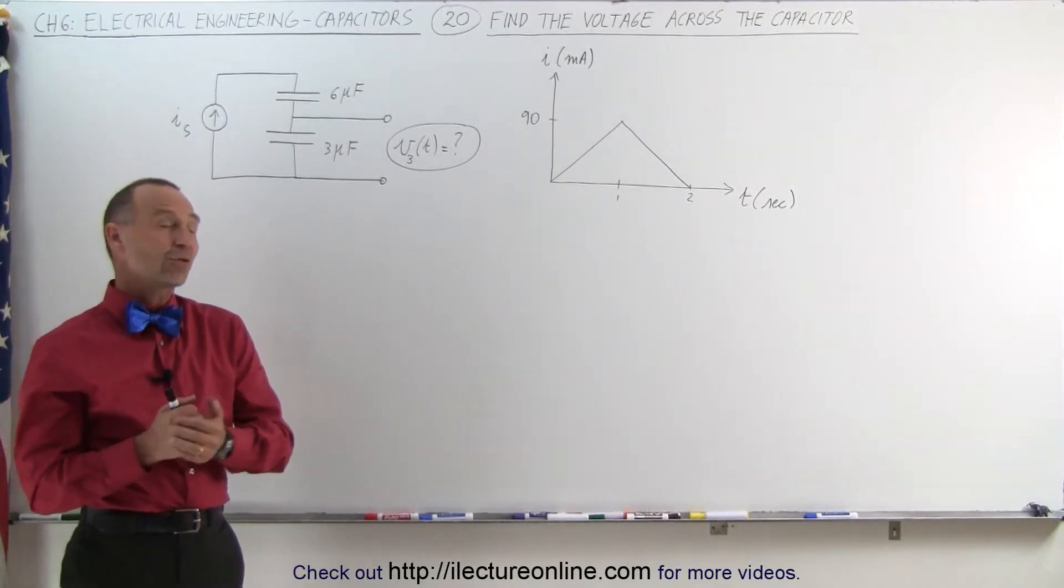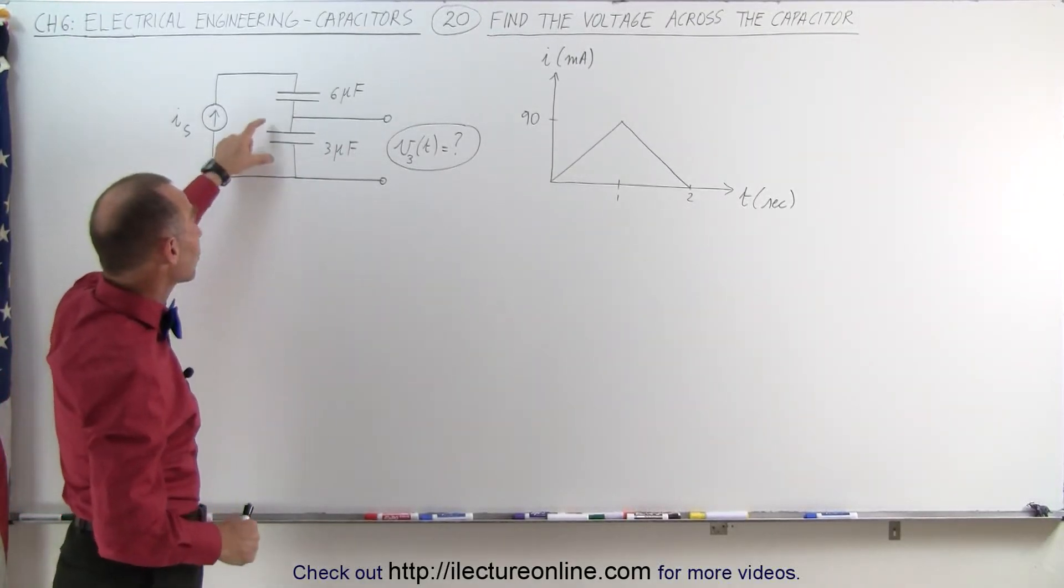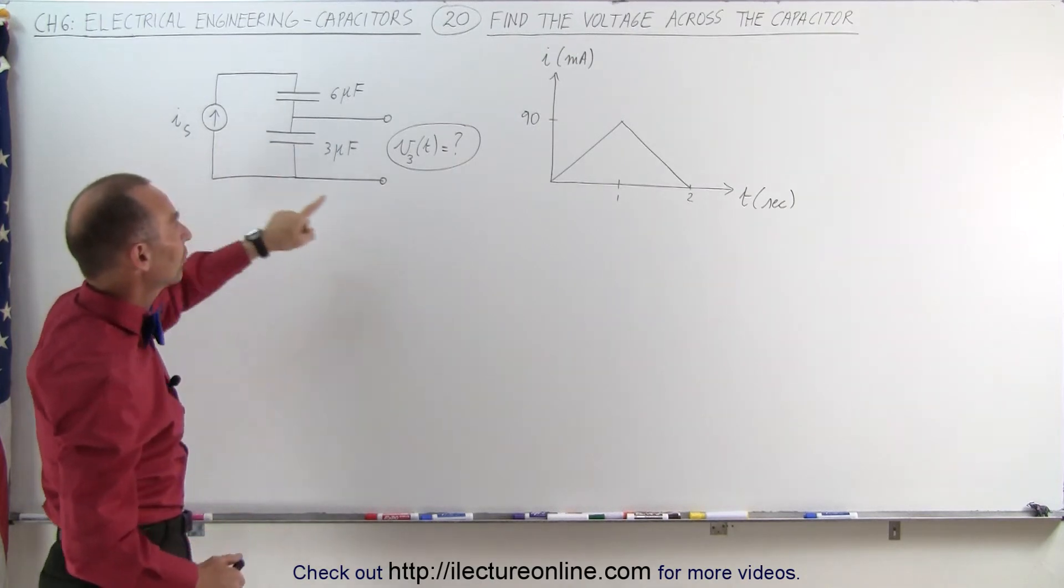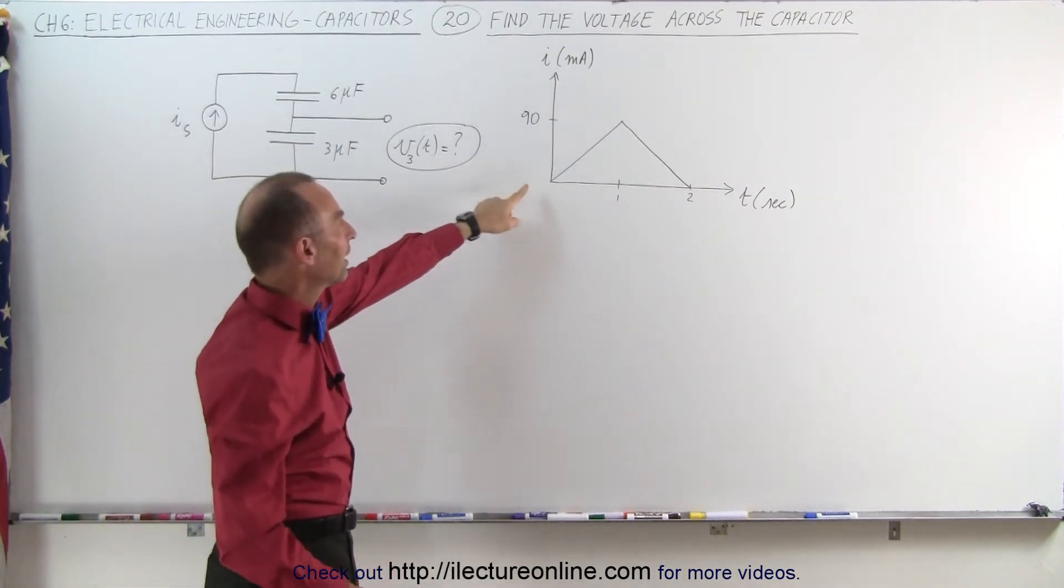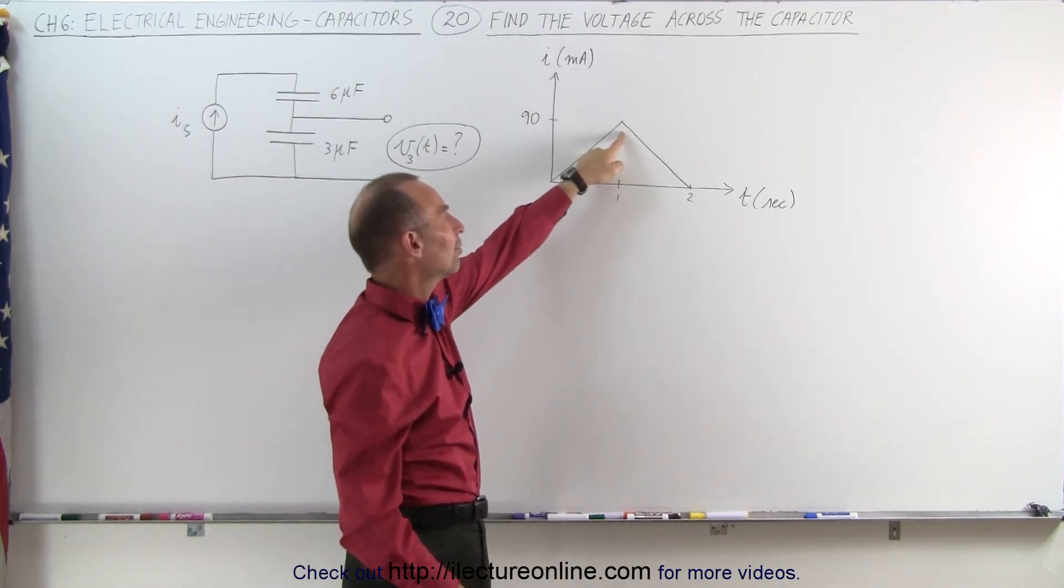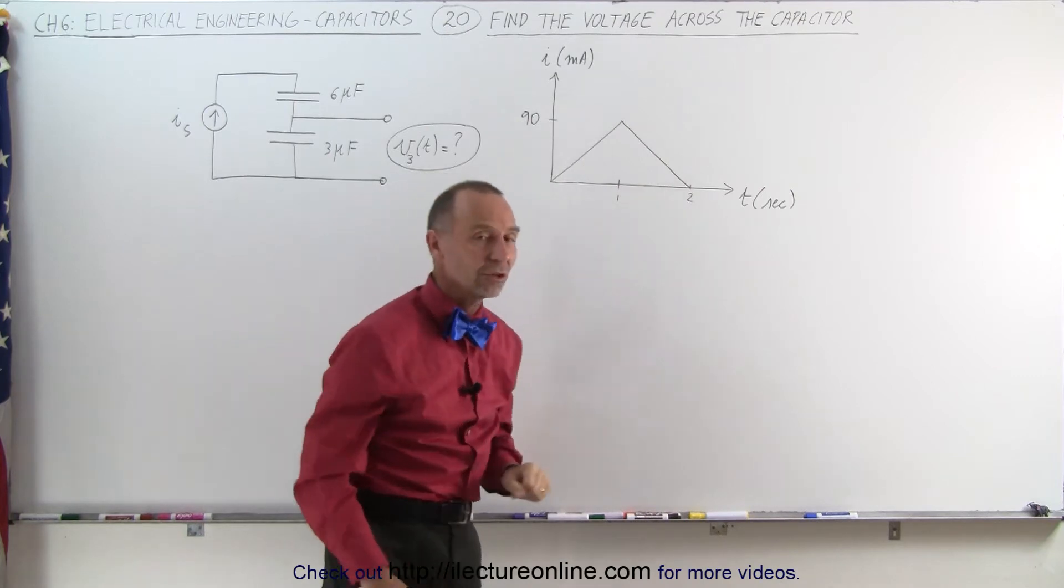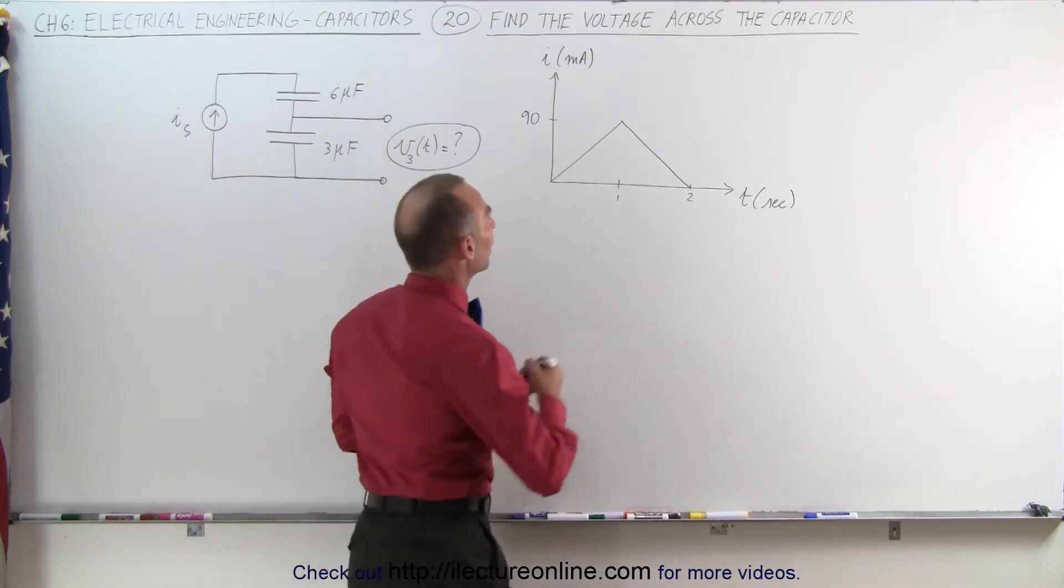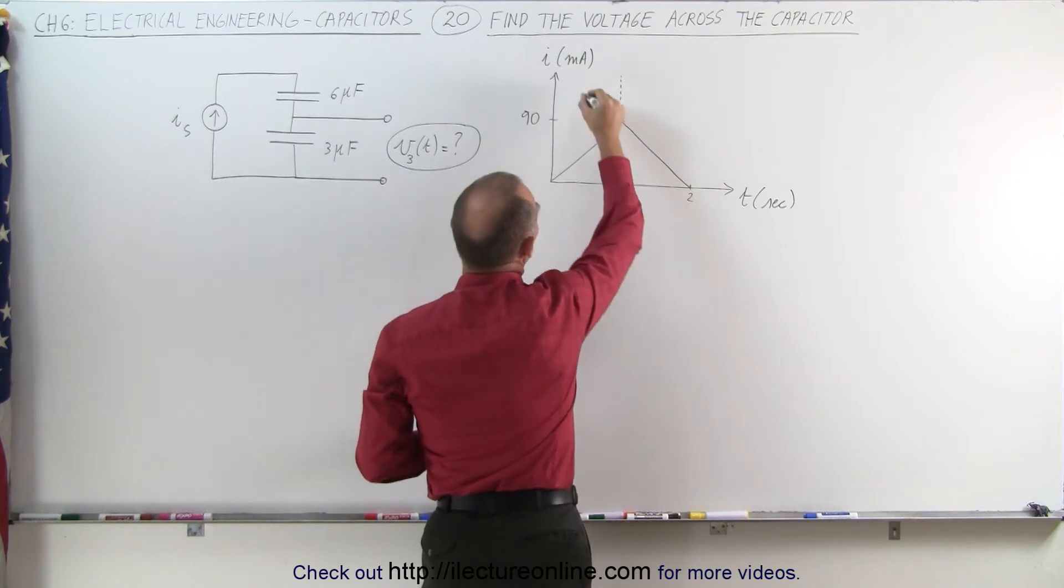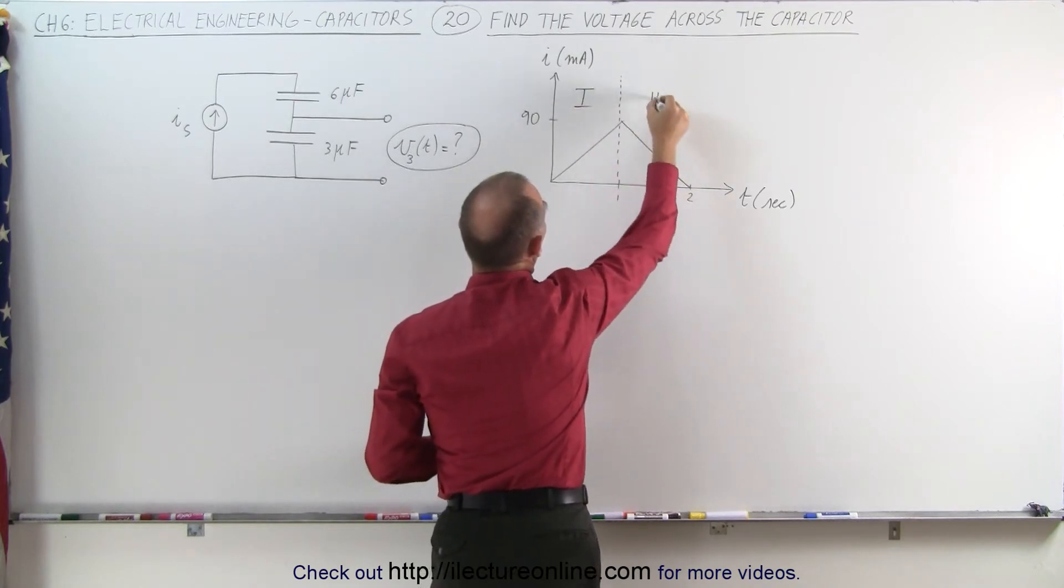Welcome to Electronline. Here we're trying to determine the voltage across the 3 microfarad capacitor. We have a current source, and the current is depicted here by the graph, that it increases from 0 to 90 milliamps in the first second, and then decreases from 90 milliamps back to 0 in the next one second. That means we have two regions in which the current behaves differently. We have region 1, and we have region 2.